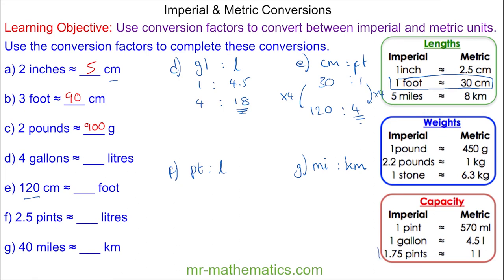And for F, we'll use this conversion here, which is 1.75 to 1, and because we want 2.5 pints, it's easiest to go to 1 pint first, which is a division of 1.75 and a multiplication by 2.5. We'll do the same to both sides, and we get approximately 1.43 liters.